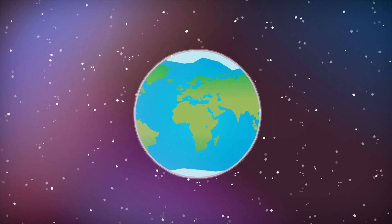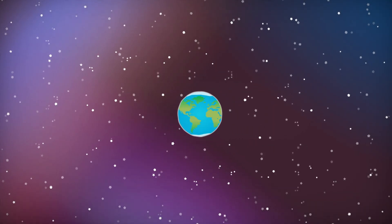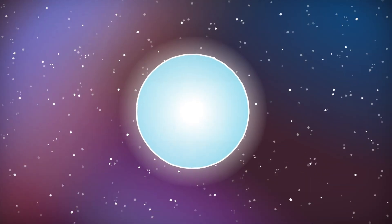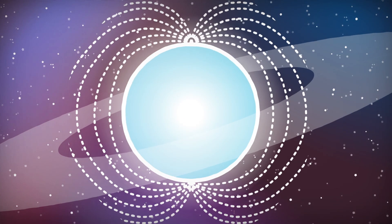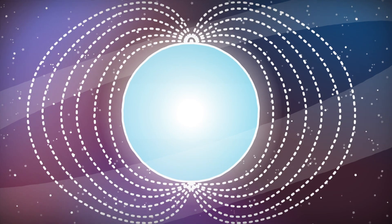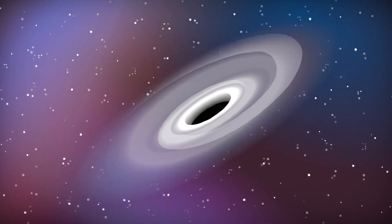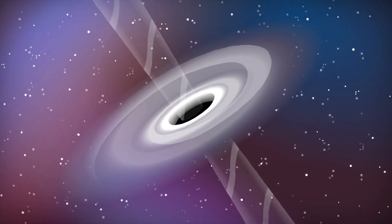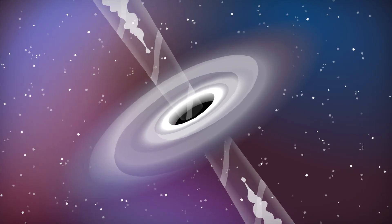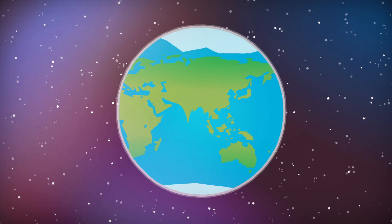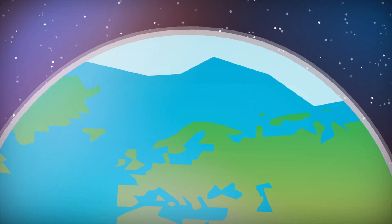The magnetic fields in our solar system are nothing compared to those found in deep space. Some neutron stars generate fields 100 billion times stronger than those found in sunspots. And the magnetic fields around supermassive black holes expel jets of gas that extend for thousands of light-years. However, on Earth, even weak solar storms can be surprisingly dangerous.